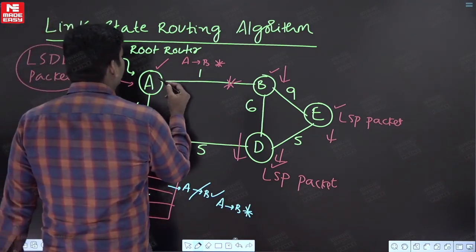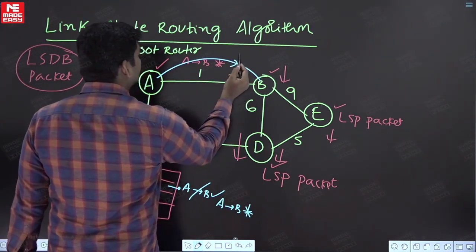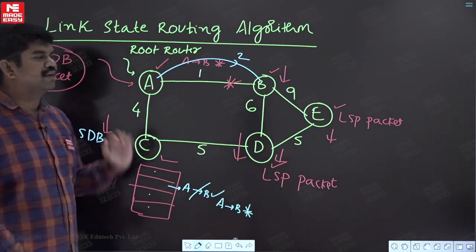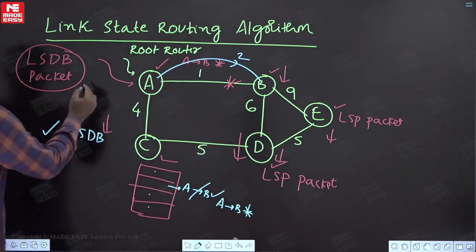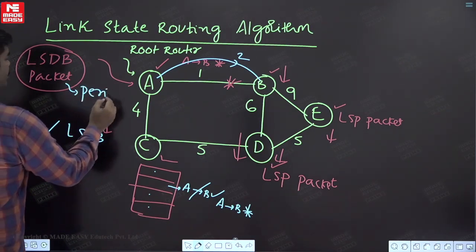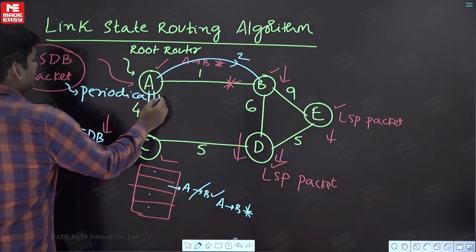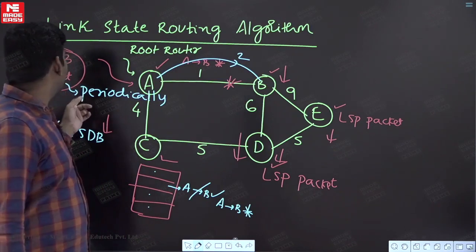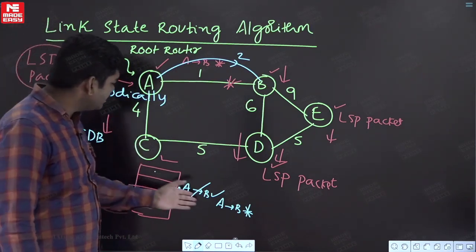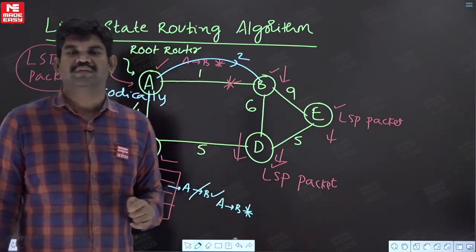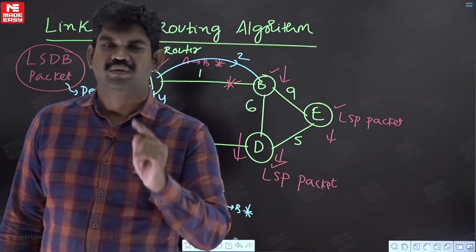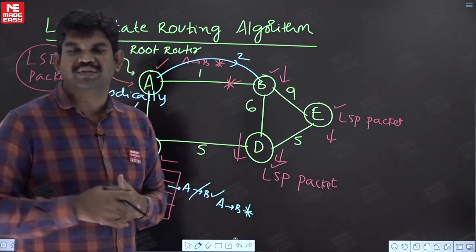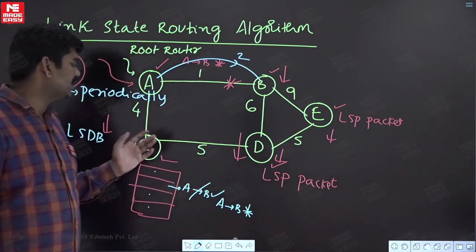If after some time A to B is connected again with 1 or 2 units, routers C, D, B, and E all need to know that link is working again. This tells us the LSDB packet should be generated periodically with the latest information. When B or C sends a new LSP packet regarding that link, the LSDB packet will be regenerated periodically, and every router will be updated again. So you will not get any count to infinity problem.